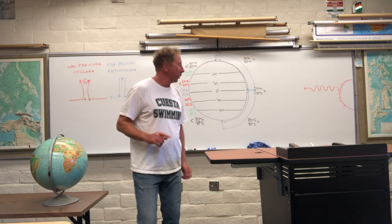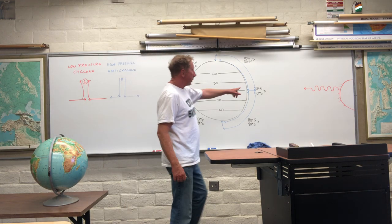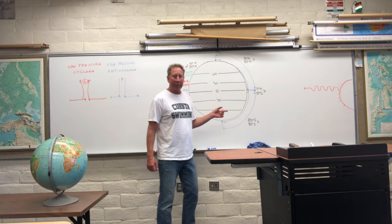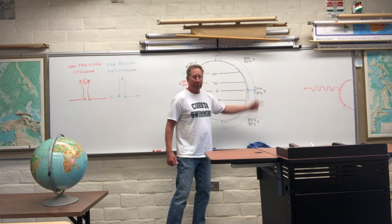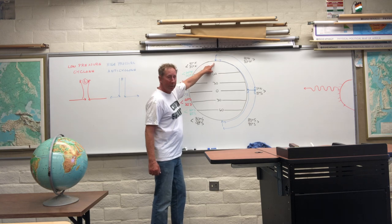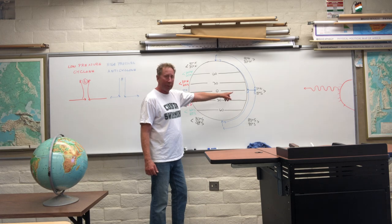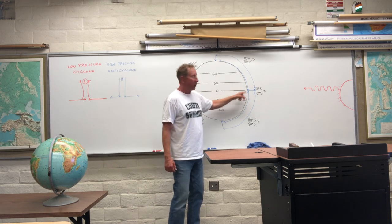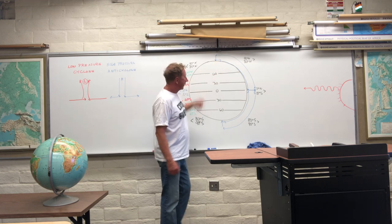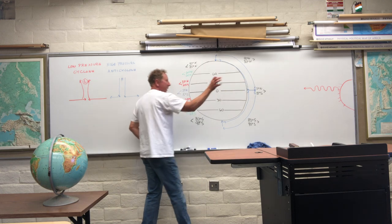We're at equinox. If we were at equinox and the sun were directly overhead at the equator, the air would be the warmest at the equator and it would rise. The air would be the coldest at the poles, because cold air sinks. So if the earth were not rotating, you might have a circulation in the atmosphere where the air would be rising near the equator and subsiding near the poles. If you can think about this three-dimensionally, the globe and the cells would come out like this.